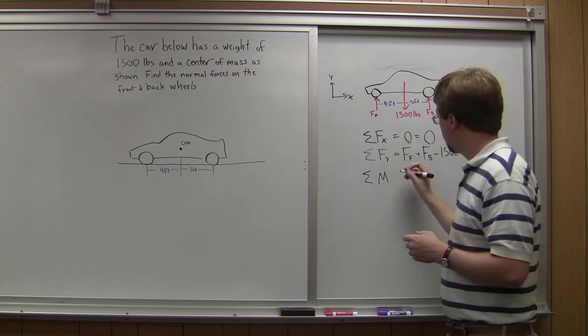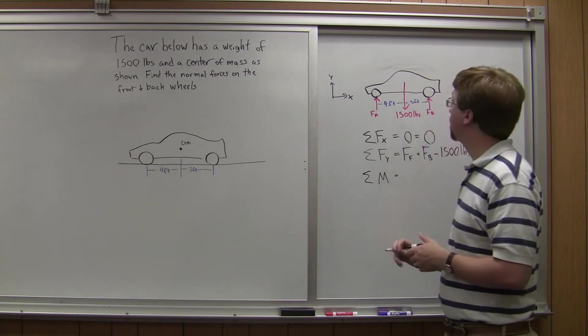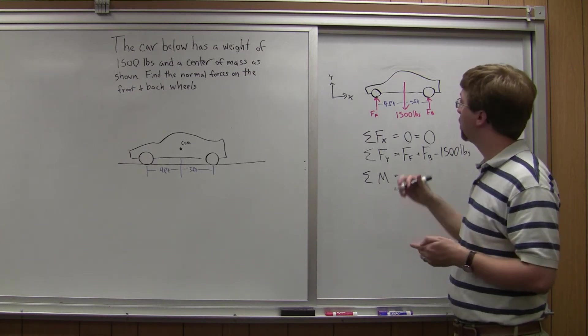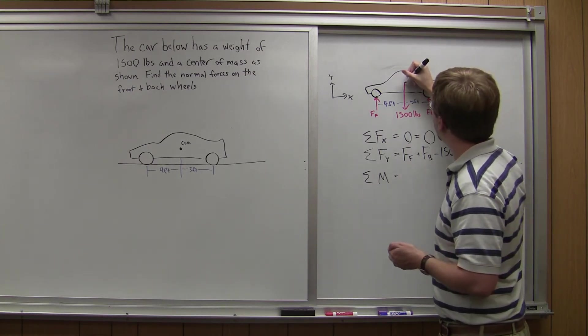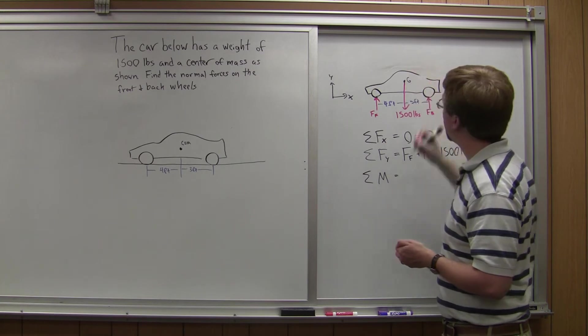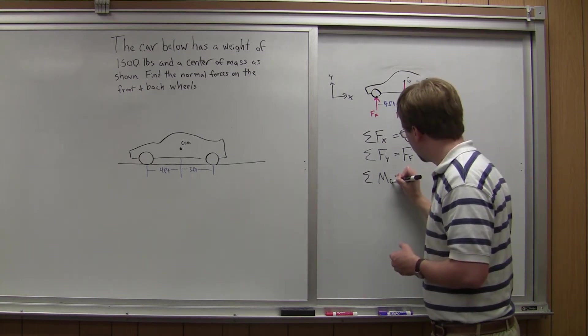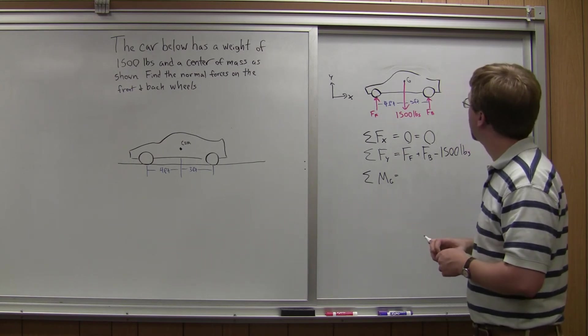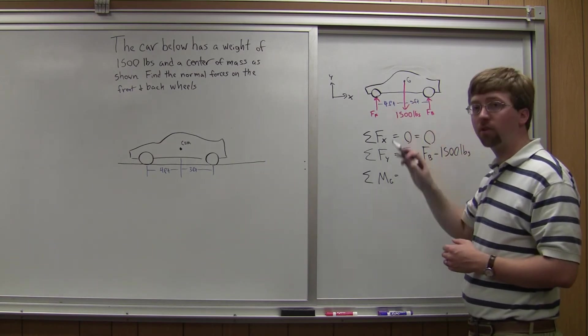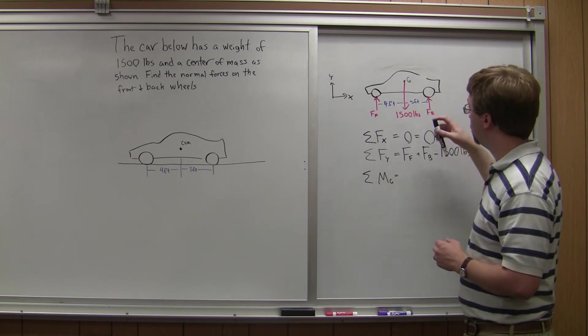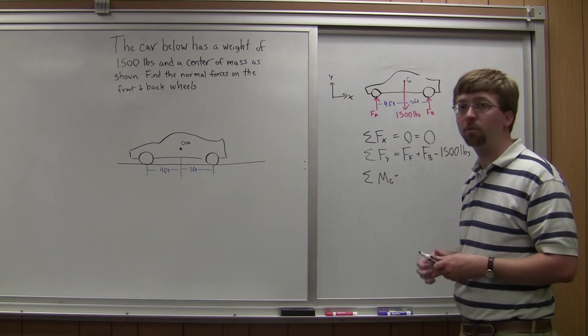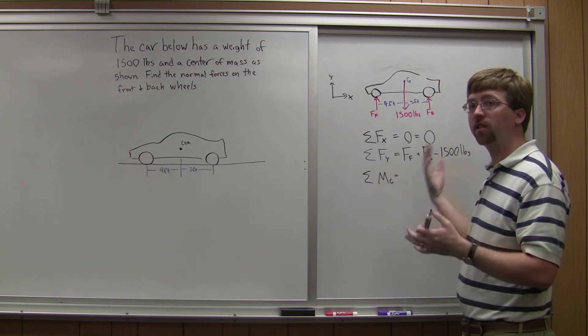All right, so now I do my sum of moments equation, and I need to pick a point that I'm going to take all these moments about. So in this case, I'm going to go ahead and use the center of gravity. I'm going to call that point g. So I'm taking all the moments about point g. And in this case, I've got three possible forces that could cause a moment. This 1,500 pound force, actually, since it's acting through point g, force times distance, distance is 0, so that's going to exert no moment.